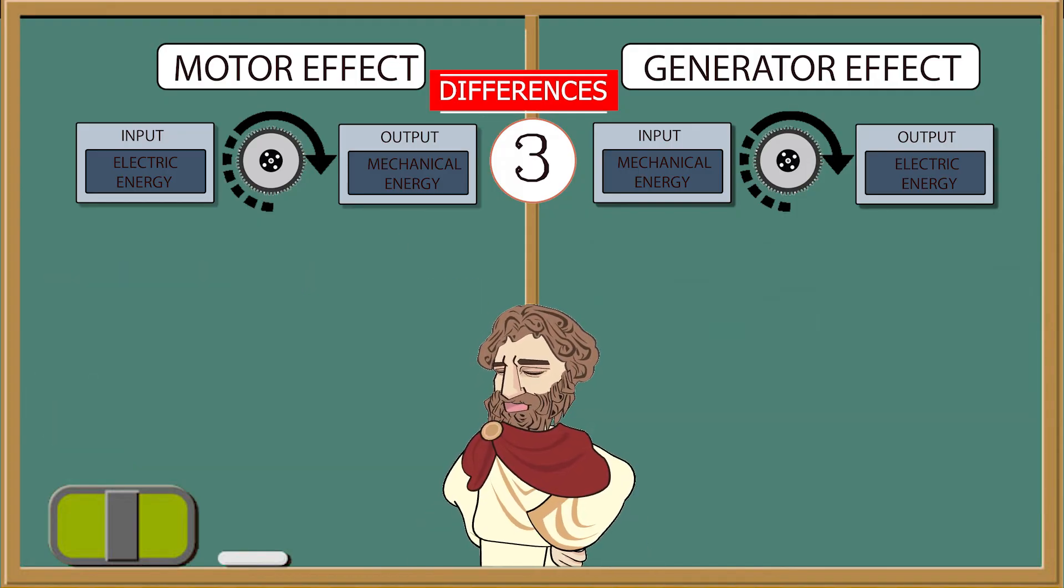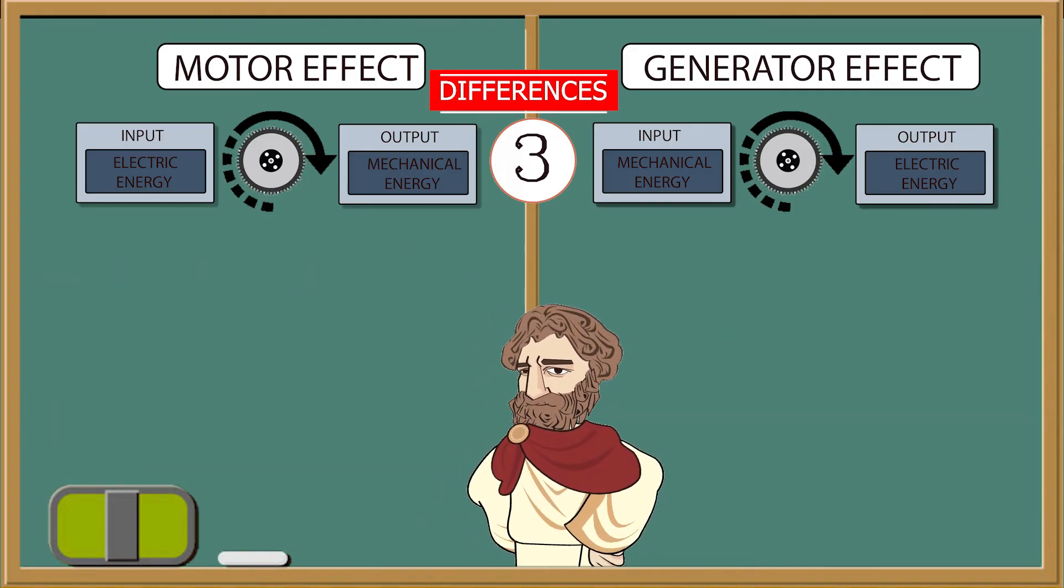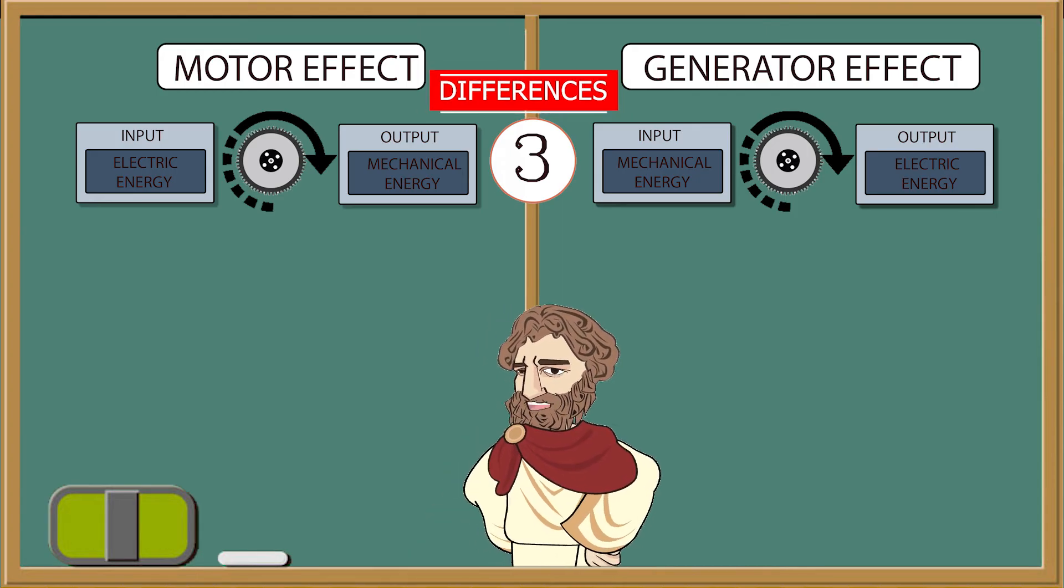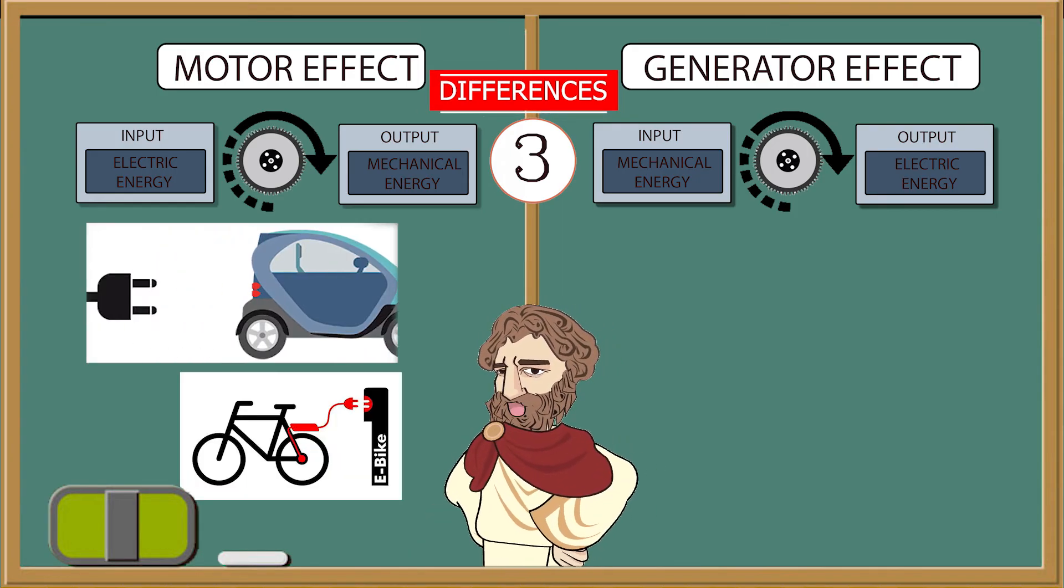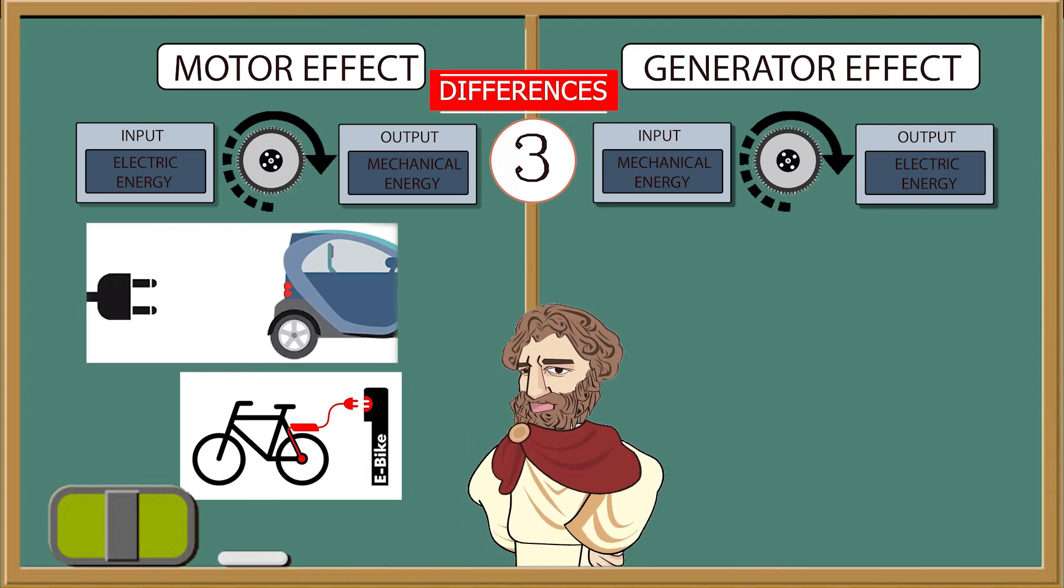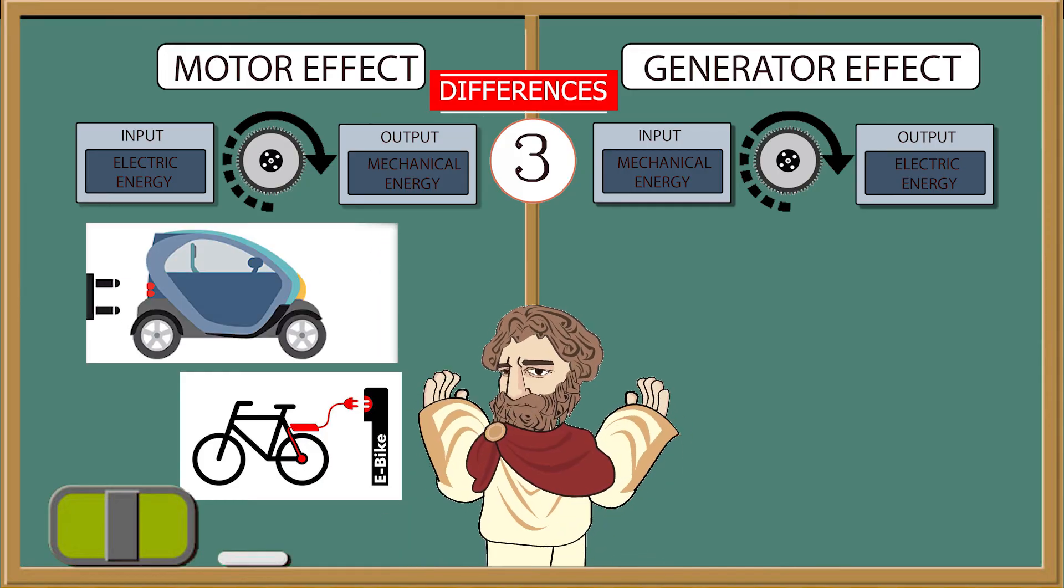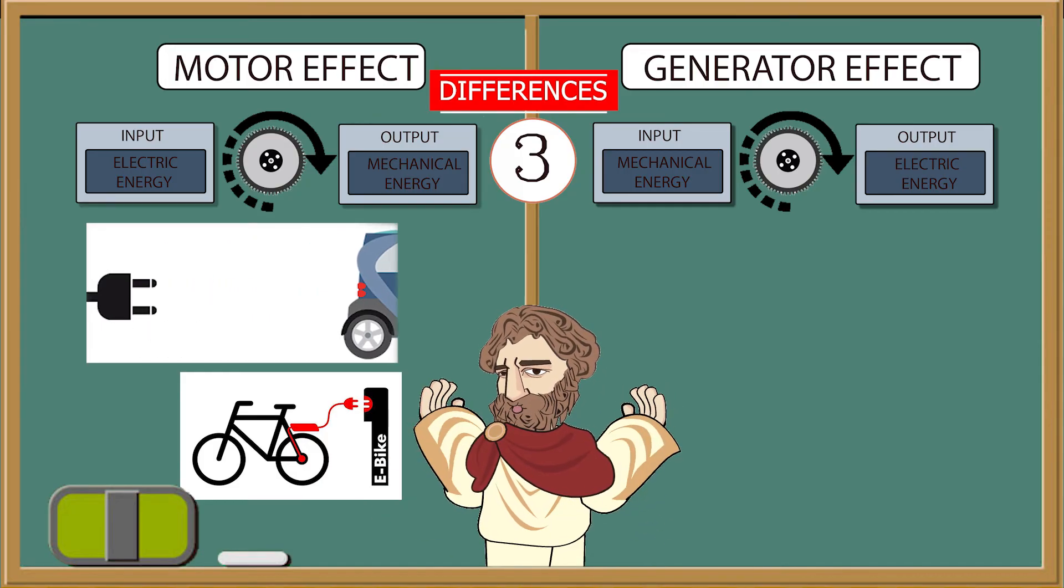A better way could be if we show examples of the motor effect and generator effect. An example of the motor effect is an electric car or bike where the electric current is supplied to the machine or device. And it gets converted into mechanical motion and as a result, the car or bike moves.